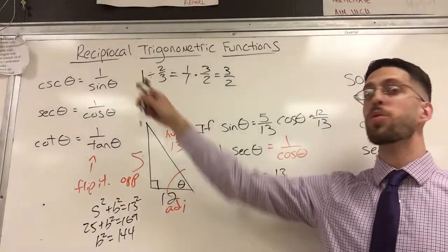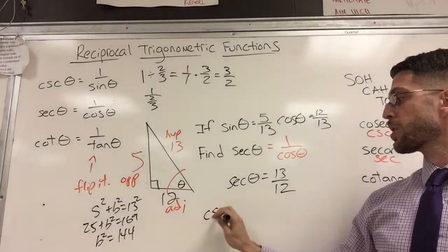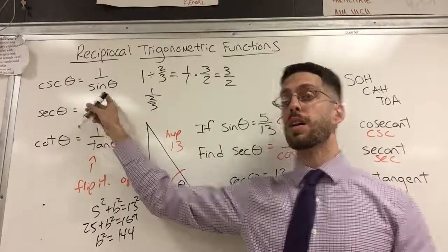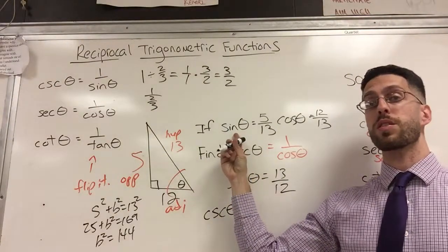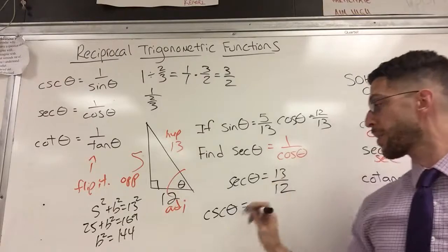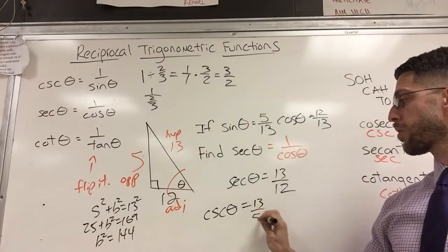What if they asked for cosecant? So cosecant is what? It's the flip of the sine. Well, that would have been straightforward, really easy, because you already told me the sine is 5/13. Flip 13 over 5.